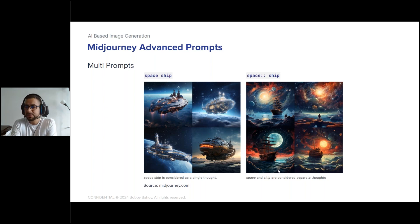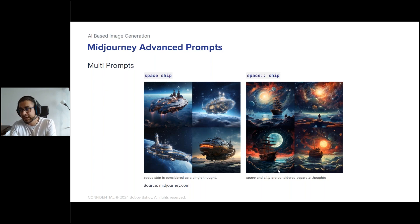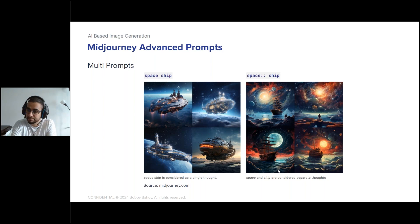There's also the multi-prompts functionality. If you say 'generate a spaceship,' it produces something from a sci-fi movie. But if you write 'space :: ship' with double colons, it generates a space environment and a normal wooden ship separately, then mixes the two together — that's how multi-prompts work.